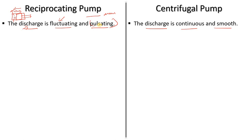To prevent pulsation, a damper is used. We also use a double-acting pump, which has two suction and two discharge pipes. When one suction valve is open, the other's discharge valve is open, making suction and discharge more continuous. In the centrifugal pump, there is no pulsation — as you start the pump, discharge is continuous.